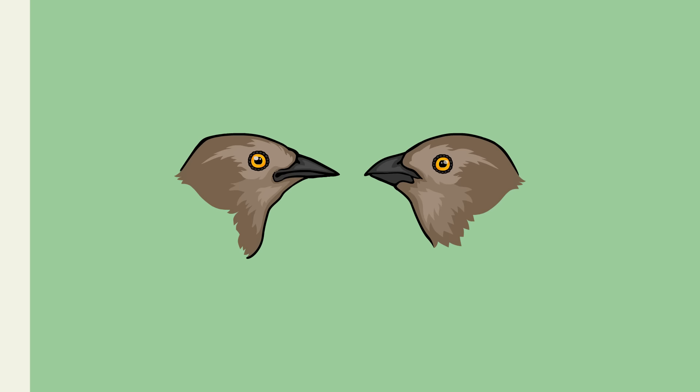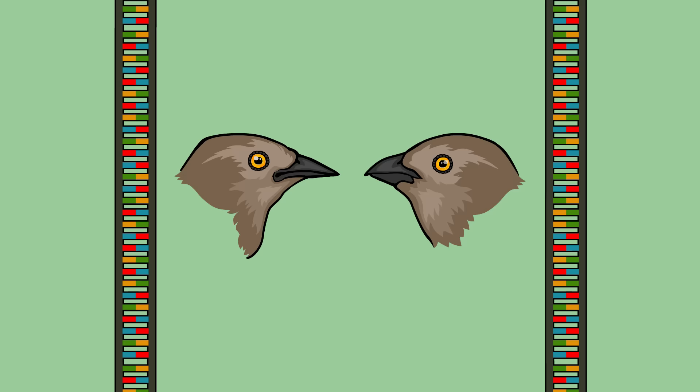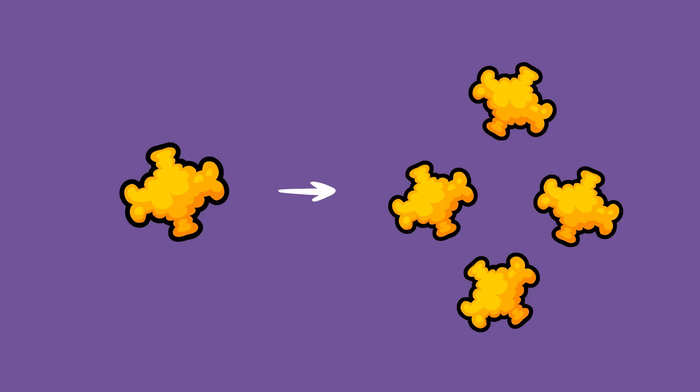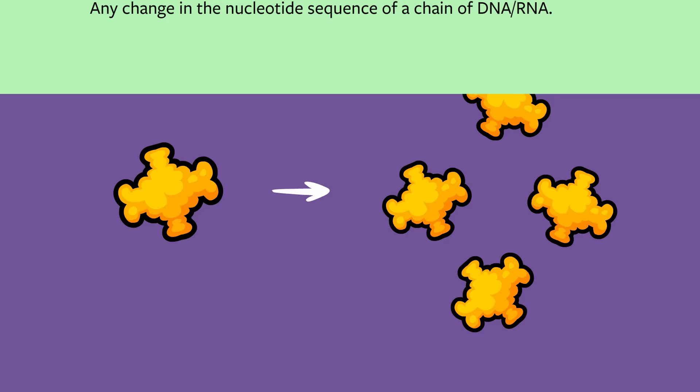Individuals have different traits — in this case, differences in beak shape — largely because of differences or mutations in their genetic code. These differences can either cause changes in a specific protein's shape, and therefore its function, or mutations can change when or how much of a particular protein will be produced.